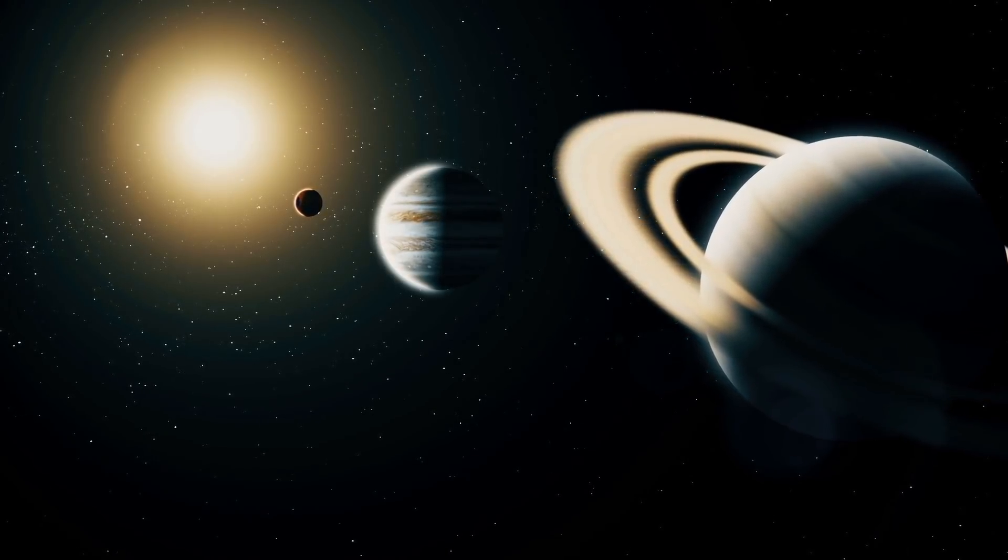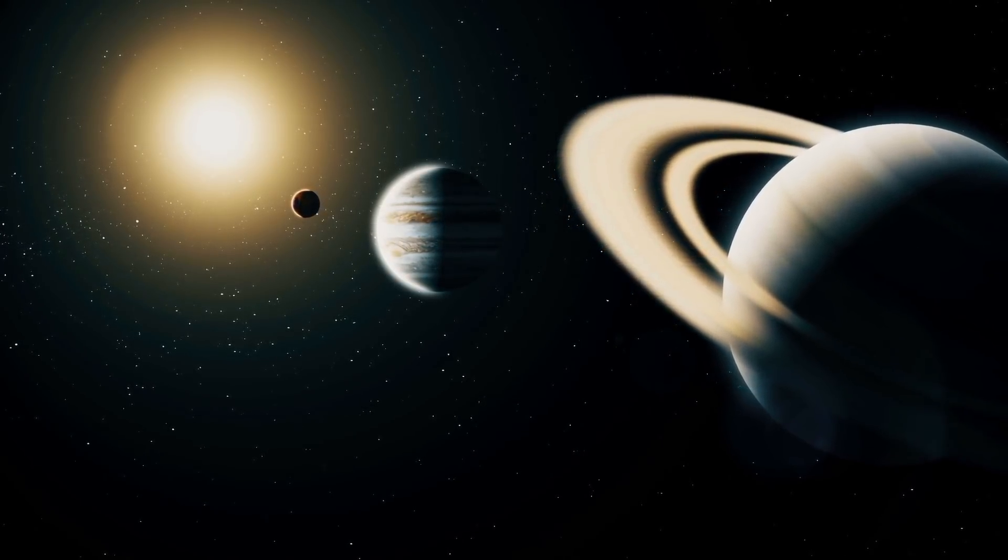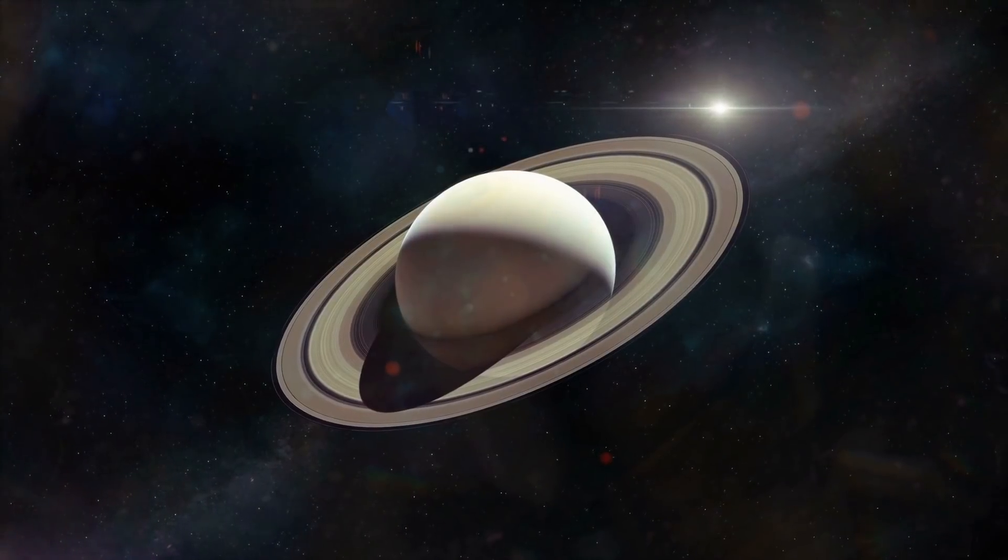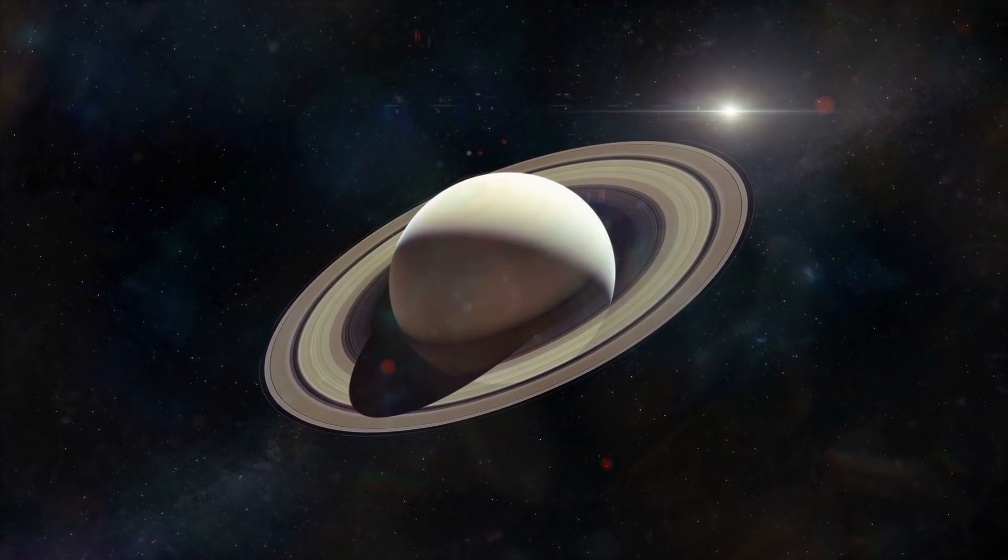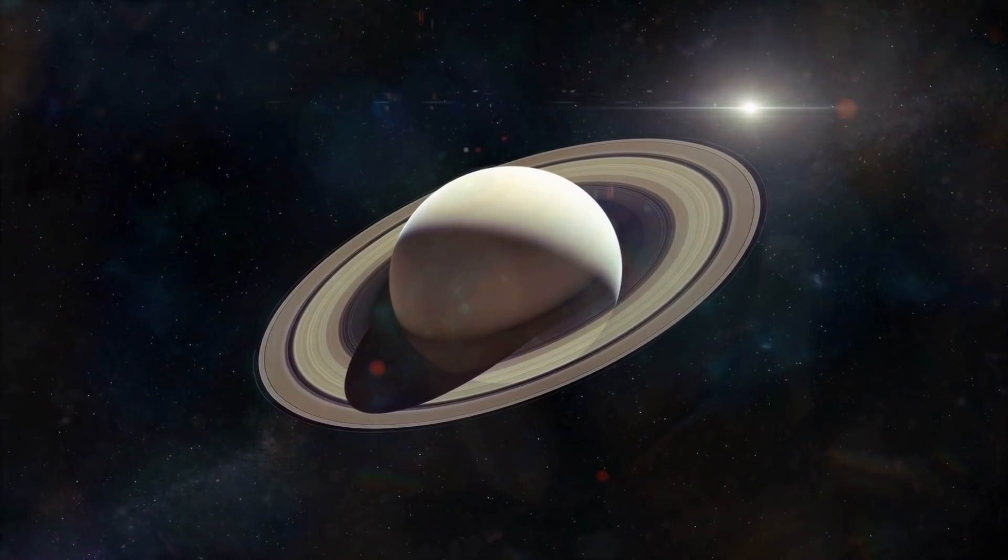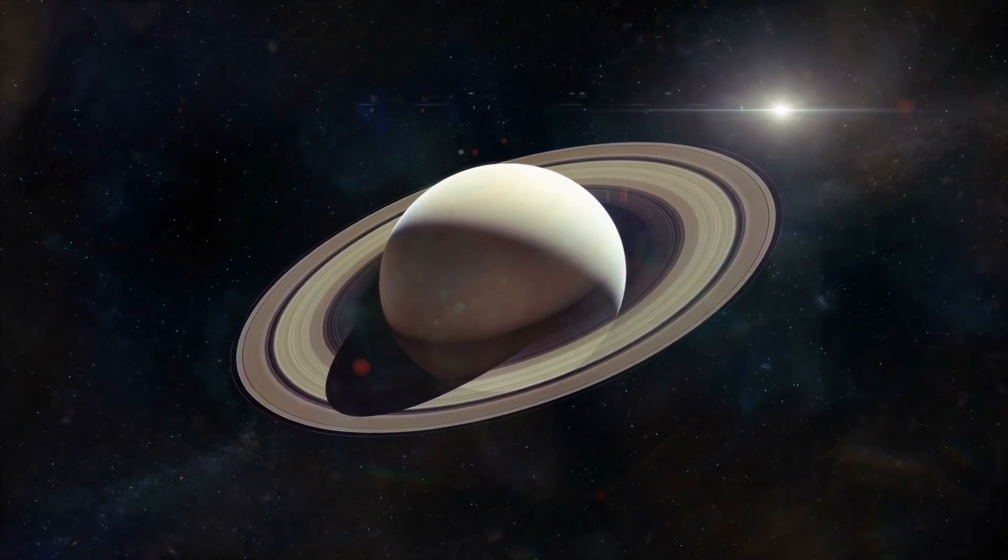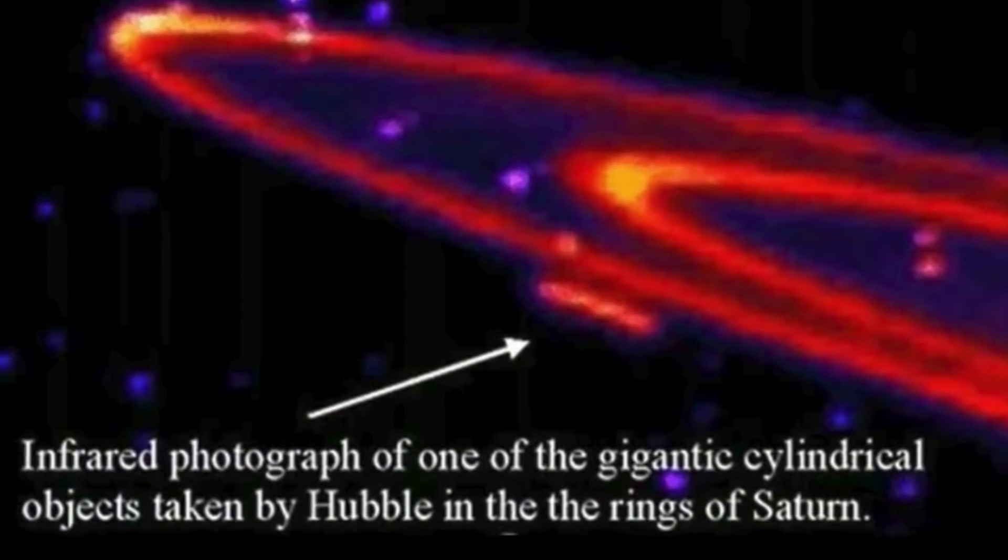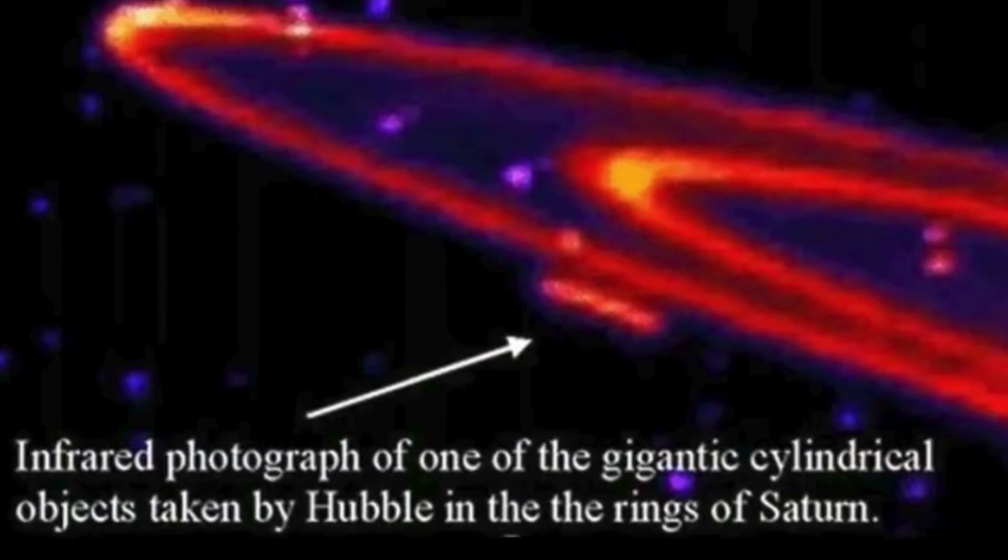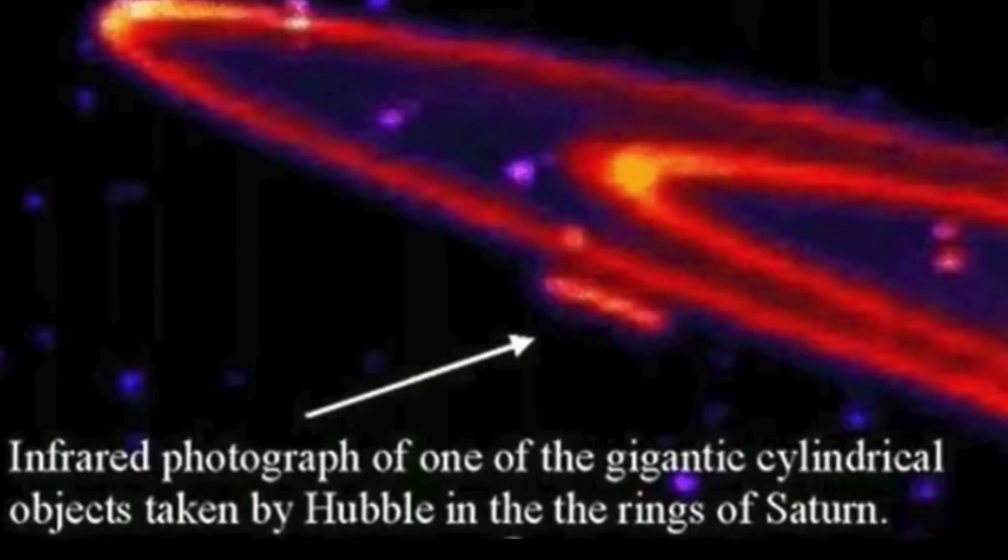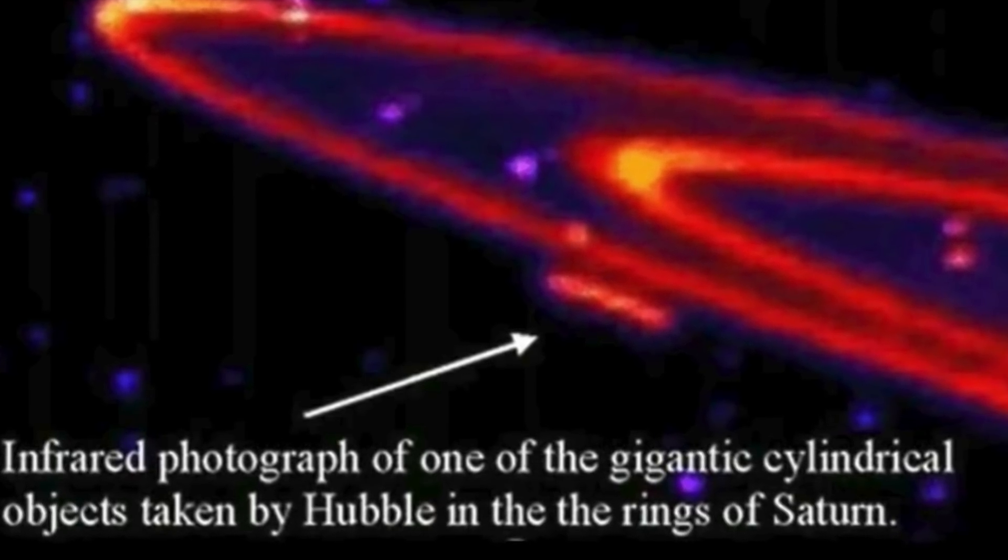A former NASA engineer has made bold claims around Saturn. He goes on to say that giant crafts can be seen around this planet, and that the National Aeronautics and Space Administration are well aware of this. The former employee goes on to detail that unidentified flying objects are interested in Saturn's rings, and on numerous occasions we've captured them lurking close to the planet.